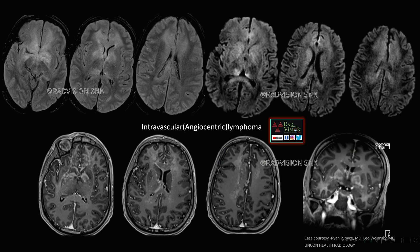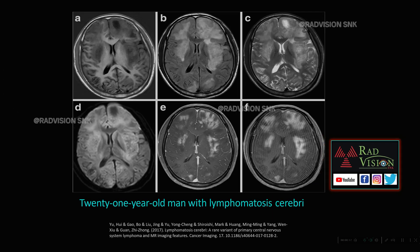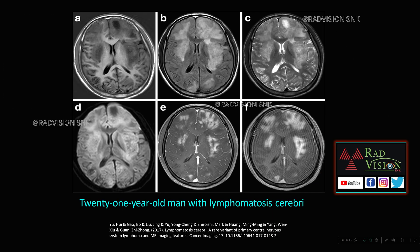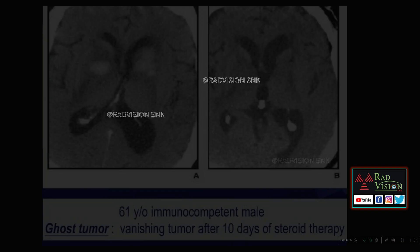Lymphomatosis cerebri: the lesion is hyperintense on FLAIR and T2, involving bilateral frontal, temporal, and even occipital lobes, showing intense heterogeneous enhancement more marked or prominent in delayed scans. This was a case of a 21-year-old with lymphomatosis cerebri, a variant of lymphoma.